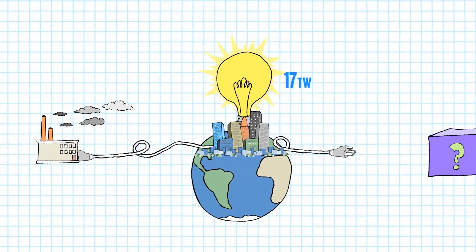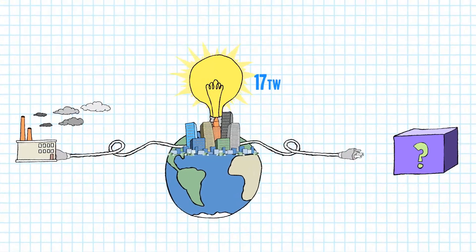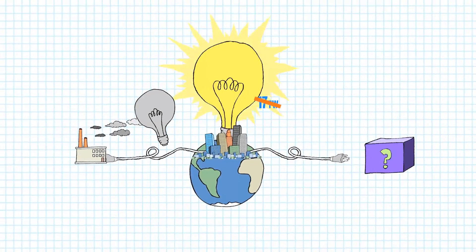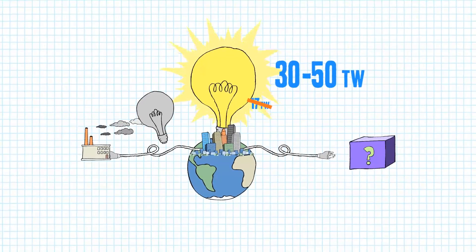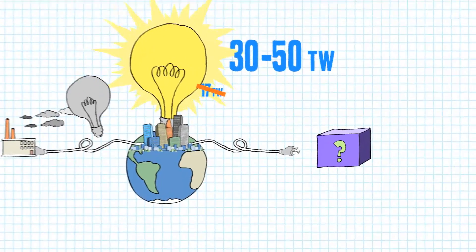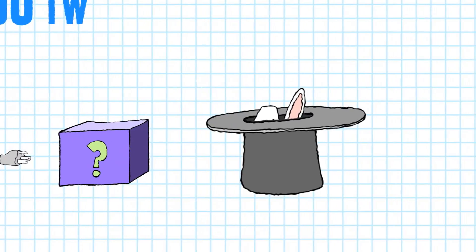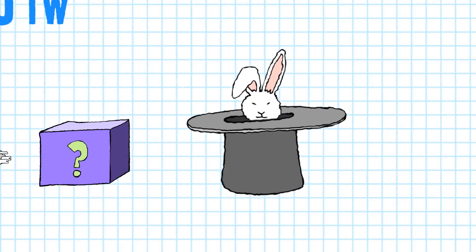And as the billions of people in places like India and China start to use as much energy as the US and Europe, we're going to have to replace that light bulb with one that runs at something more like 30 to 50 terawatts. So not only do we need to find a way to generate electricity without putting more carbon in the air, that source also has to offer at least twice as much energy as we use today.